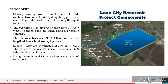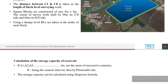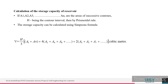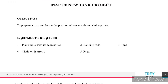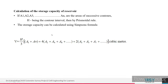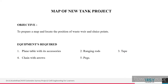After taking observations, plot the RL at each point on an A1 graph sheet to calculate the storage capacity. Each square block area is calculated as A1, A2, A3, and so on, up to the total number of square blocks. The total volume is found using a formula where H is the contour interval.